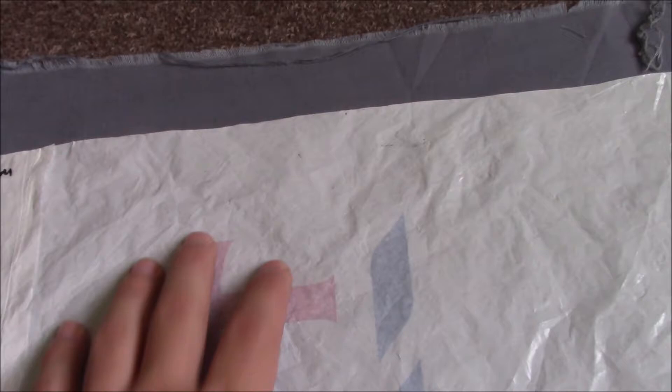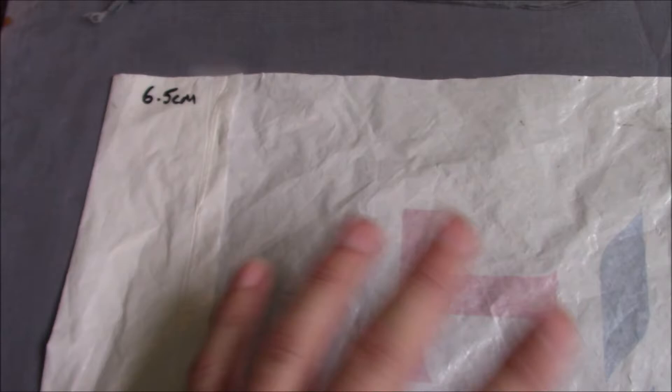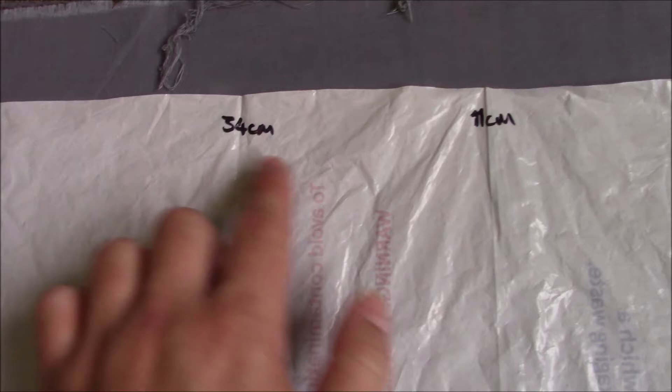The most important dimensions on the bag are your outside dimensions. So from this point here to that point there. And then from this side to this side. That will tell you how large a piece of fabric that you need. You have to imagine as well these turned over sections folded out flat. So our total is 46 inches or 117 centimeters by 17 and 3 quarter inches or 45 centimeters.